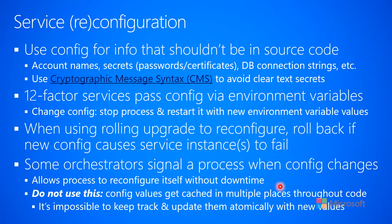We use configuration for information that shouldn't be stored in source code. Things that qualify for this are account names, secrets, passwords, certificates, database connection strings, etc. For secrets like passwords, you want to use a thing called cryptographic message syntax, or CMS, in order to avoid putting clear text secrets in your configuration. I'm going to talk more about CMS on the very next slide.